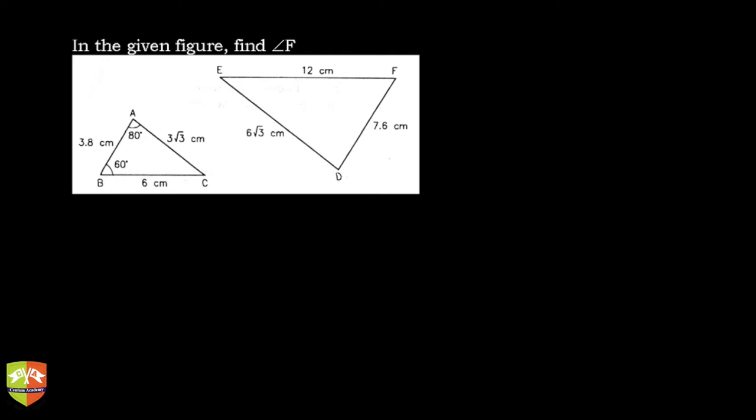Hello friends, so here is a question on similar triangles. Let's try and solve this. It's given that there are two triangles and the sides have been given: AB is 3.8 cm, BC is 6 cm, CA is 3√3 cm, and ED is 6√3 cm, EF is 12 cm, and DF is 7.6 cm.